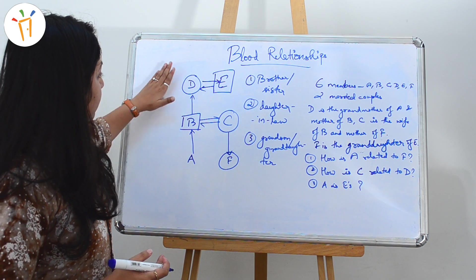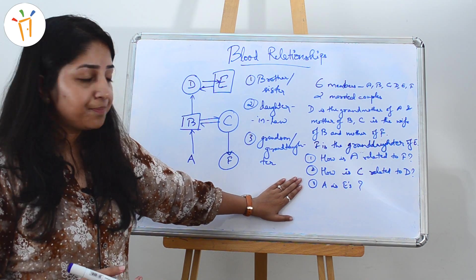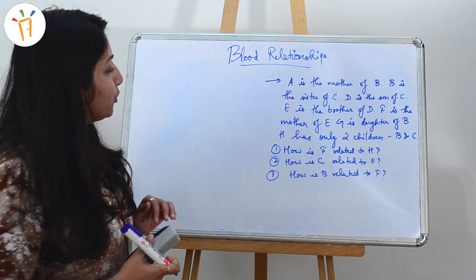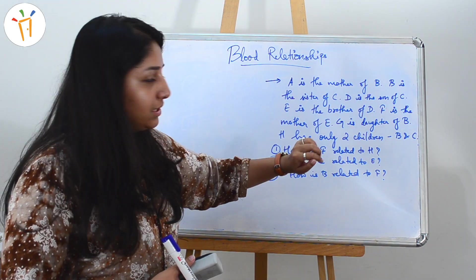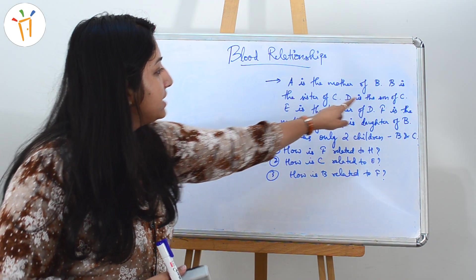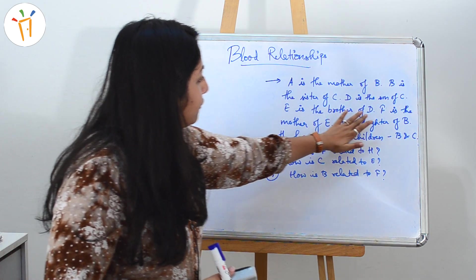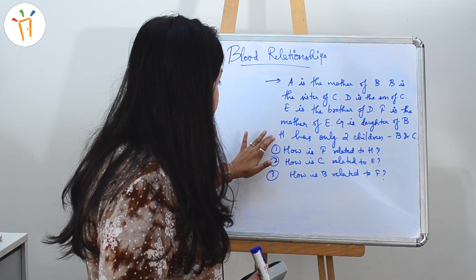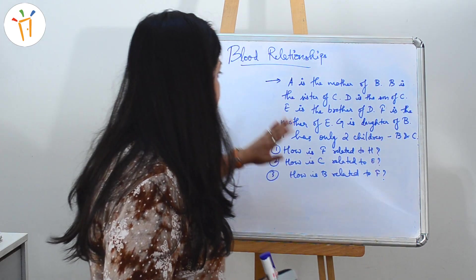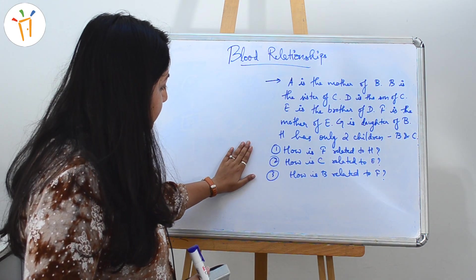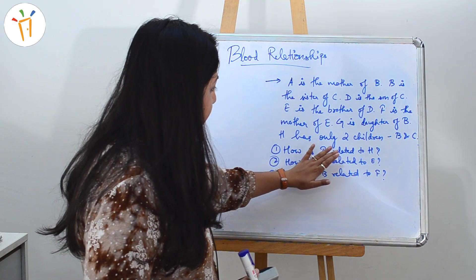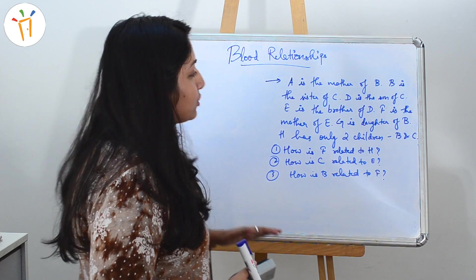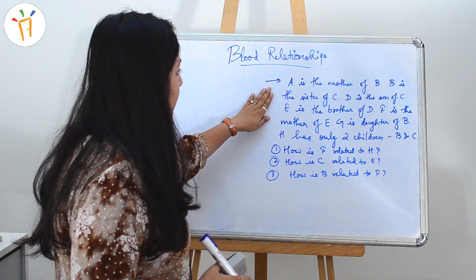You saw how easily after drawing the diagram it was easy to solve the question. Let's move on to our next question. Our second problem: A is the mother of B, B is the sister of C, D is the son of C, E is the brother of D, F is the mother of E, G is the daughter of B, and H has only two children B and C.